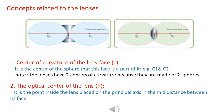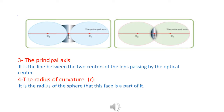Concepts related to lenses. Number 1: center of curvature of the lens face — it is the center of the sphere that this face is a part of. Lenses have two centers of curvature because they are made of two spheres. Number 2: the optical center of the lens — it is a point inside the lens located on the principal axis. The principal axis is the line between the two centers of the lens passing through the optical center. The radius of curvature is the radius of the sphere that this face is a part of.